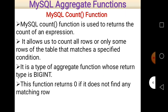COUNT is one of them, and it allows us to count all rows or only some rows according to the condition specified. An important thing about the COUNT function is that its return type is BIGINT. It returns a BIGINT value. Another important point is that this function returns zero if it does not find any matching value — so if no records are found according to the condition, it returns zero.